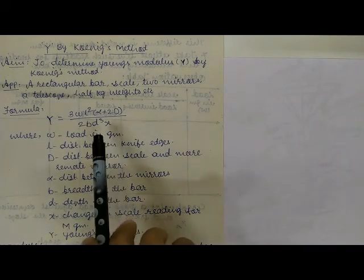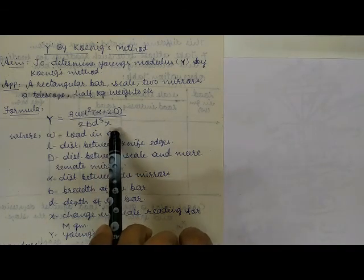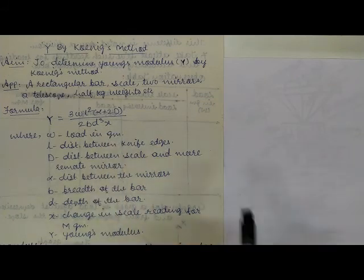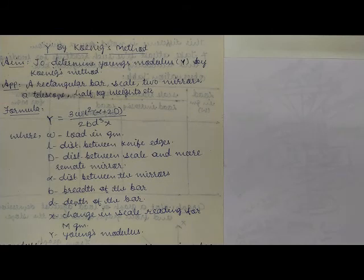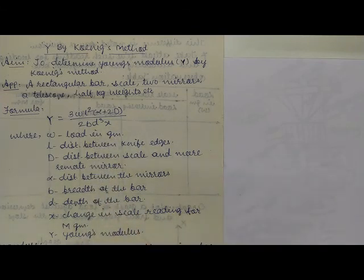This is the formula we have to use. You can see there are terms involved: 3, W, L squared, alpha, D, B, D, and Y — all terms are shown below the formula.